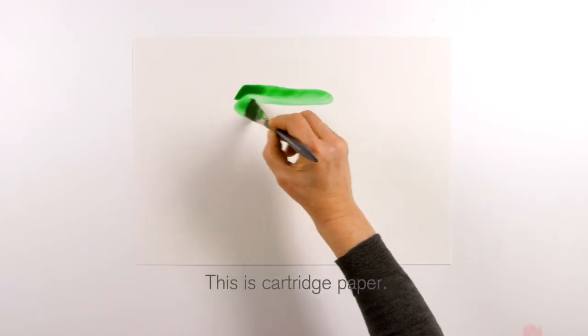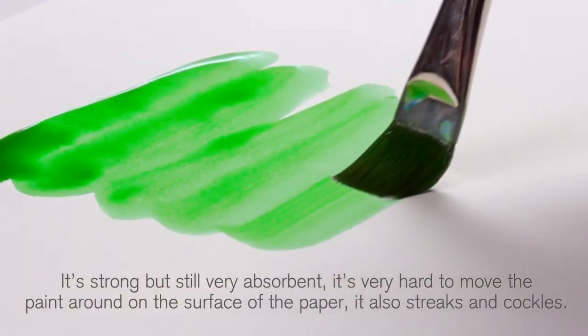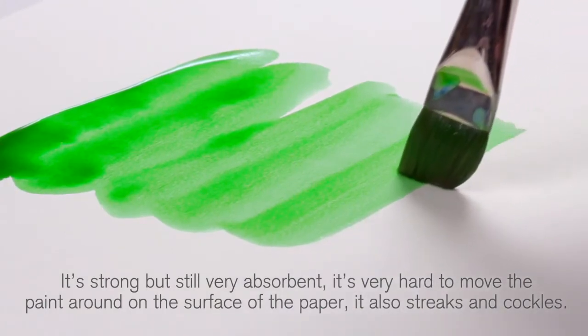This is cartridge paper. It's strong but still very absorbent. It's very hard to move the paint around on the surface of the paper. It also streaks and cockles.